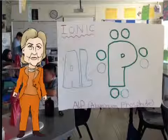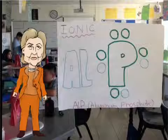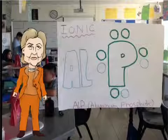Also, since phosphorus has 5 valence electrons, it needs a total of 8 valence electrons to make it stable. So then it bonded with aluminum, who has 3 valence electrons, and created an ionic compound called aluminum phosphide.